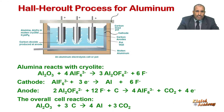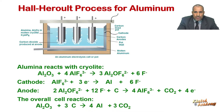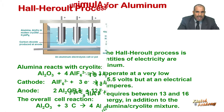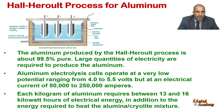The electrode reactions are still not fully understood, but they probably involve complex anions formed by the reaction of aluminium oxide and cryolite. The complex anions are reduced at the cathode to molten aluminium metal and are oxidized at the anode to oxygen gas, which reacts with the graphite anodes to give carbon dioxide gas. As a result, the anodes are consumed rapidly and must be replaced frequently.